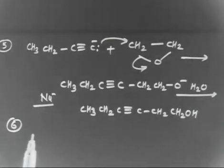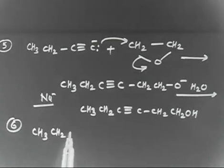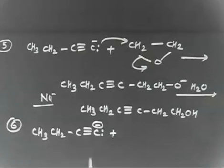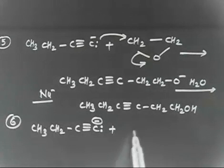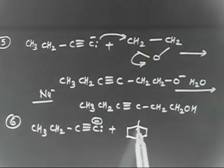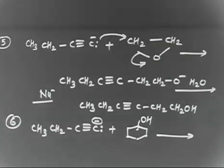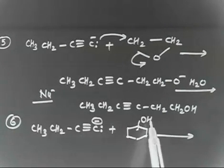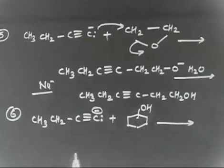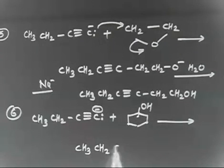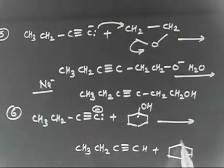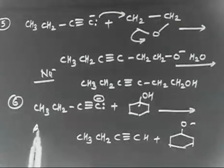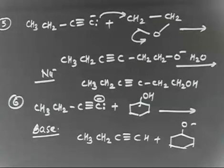For the sixth reaction, CH3CH2C≡C minus reacts with cyclohexanol. This time it does not act as a nucleophile — it acts as a base. It takes H plus from the alcohol, forming CH3CH2C≡CH plus the cyclohexanoxide anion (O minus). So the acetylide ion can act as either a base or a nucleophile depending on the substrate.